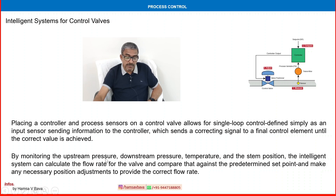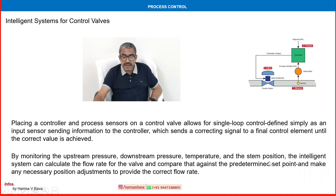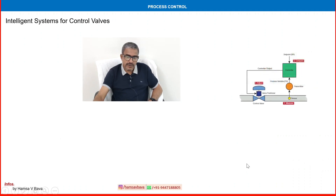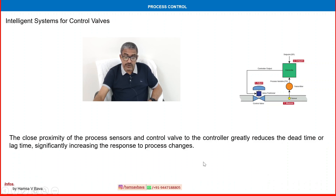Placing a controller and process sensors on a control valve provides a local control loop for single-loop control — an input sensor sends information to the controller, which sends a correcting signal to the control element until the corrective value is achieved. By monitoring upstream pressure, downstream pressure, temperature, and stem position, the intelligent system can calculate the flow rate and compare it against the predetermined set point, making any necessary position adjustment. The close proximity of the process sensors and control valve to the controller greatly reduces dead time and lag time, significantly increasing the speed of process response.